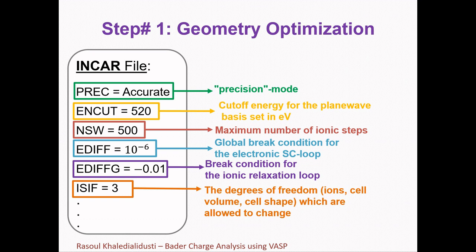The first tag is PREC, which specifies the precision mode. The PREC tag determines the energy cutoff if the energy cutoff is not specified in the INCAR file, in addition to the fast Fourier transform grids such as NGX, NGY, or NGZ. For an accurate stress tensor, the energy cutoff should be increased manually, and if very accurate forces are required, PREC=Accurate can be used in combination with an increased cutoff from the POTCAR file. I always recommend specifying the energy cutoff ENCUT manually in the INCAR file to avoid incompatibilities between calculations.